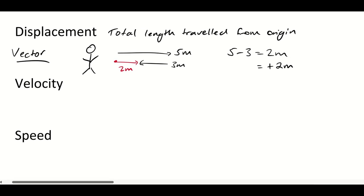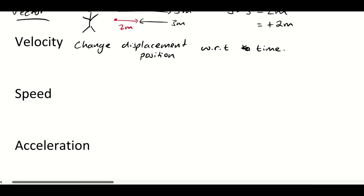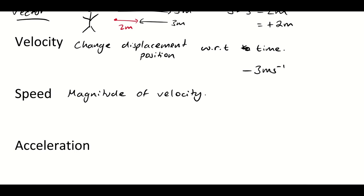Velocity is the rate of change — it's the change of displacement or position with respect to time (commonly abbreviated W-R-T). Speed is the magnitude of the velocity. So if the velocity is minus 3 metres per second, that means the object has gone 3 metres per second but in a negative direction — like a ball that's been thrown in the air on its way back down, coming 3 metres per second in a negative direction.